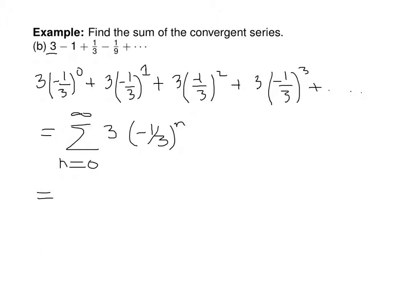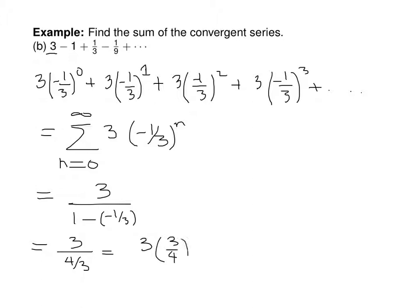This is the sum from n equals 0 to infinity of 3 times negative 1 third to the n. Since the absolute value of negative 1 third is between 0 and 1, this adds up to 3 divided by 1 minus negative 1 third, or 3 divided by 4 thirds, which equals 3 times 3 quarters, or 9 quarters.